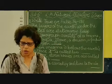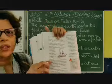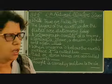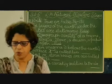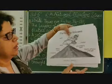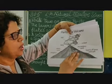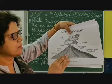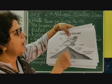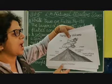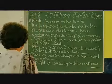This machine is called a seismograph, which you have done in social studies in the chapter on natural disasters. Coming to the third one: when magma is below the earth's surface, is it called lava? When magma is deep under the earth, it is not called lava. Lava is when it comes out. It is known as magma when it is beneath the earth, and when due to pressure there is a crack and it comes out — the molten rocks, ash, and gases — they are called lava. So it is false.